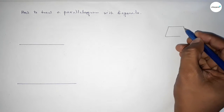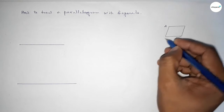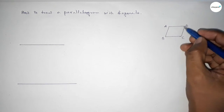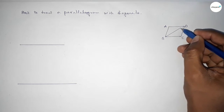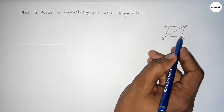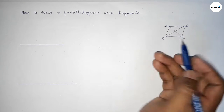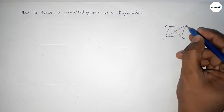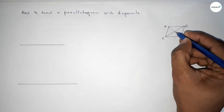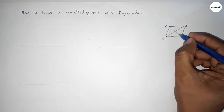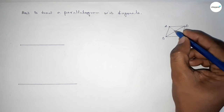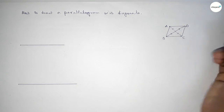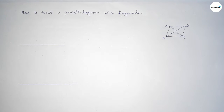Now roughly discussing the properties of a parallelogram — roughly drawing a parallelogram ABCD and joining the diagonals AC and BD. We know that both diagonals of a parallelogram bisect each other, so the two halves of each diagonal are equal.